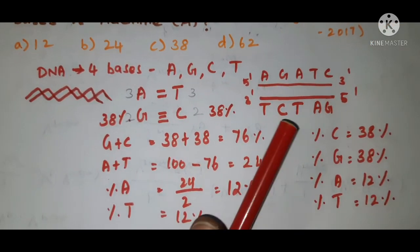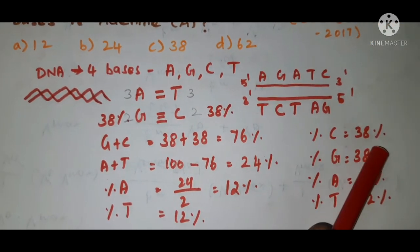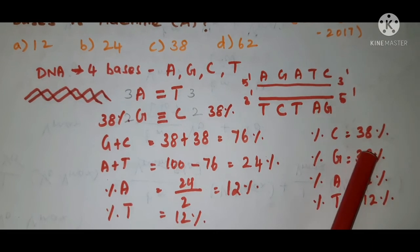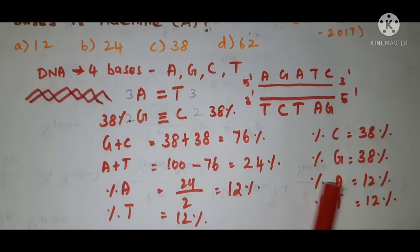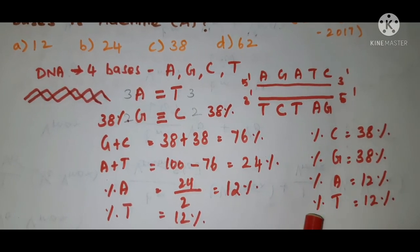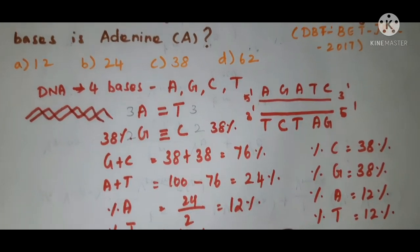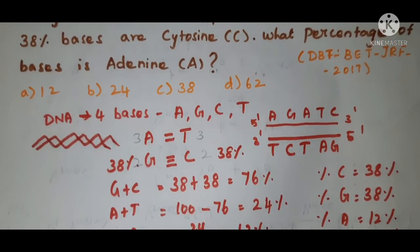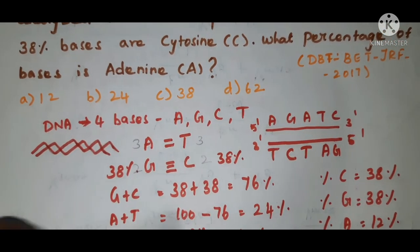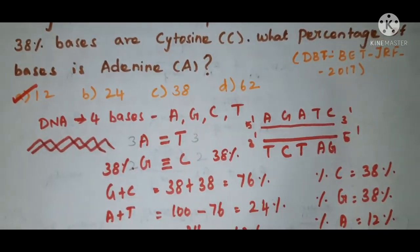So the percentage composition of all bases are: percentage C is 38 percent, percentage G is also 38 percent, percentage A is 12 percent, and percentage T is also 12 percent. In our question they are asking for the percentage composition of adenine A, so the answer is 12 percent.